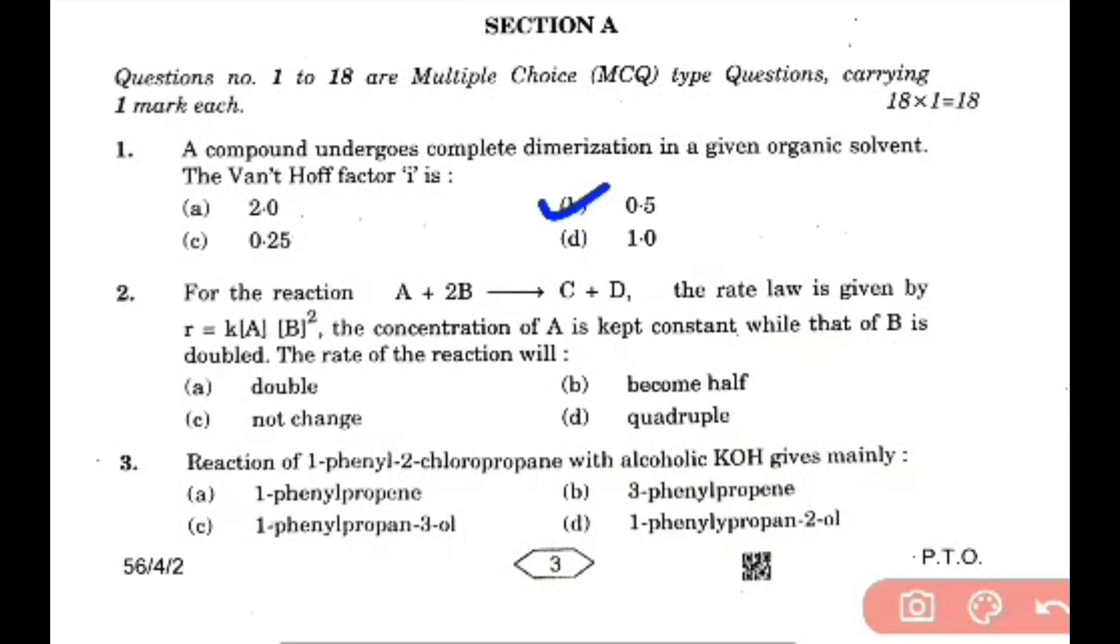For the reaction A plus 2B that forms C plus D, the rate law is given by R equals K[A][B]squared. The concentration of A is kept constant, B concentration is doubled. Then rate of reaction will be 2 squared, that will be quadruple.